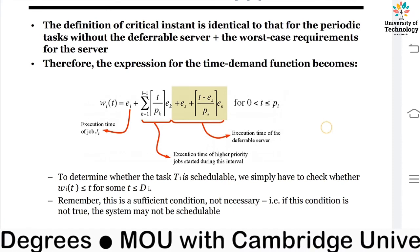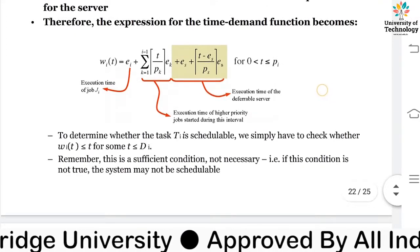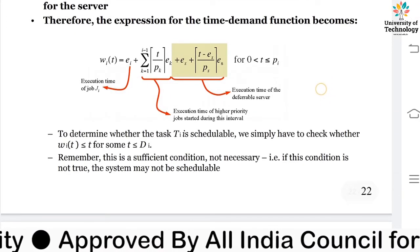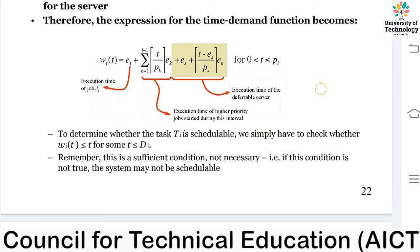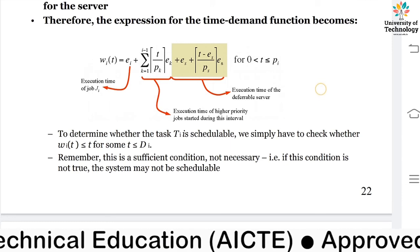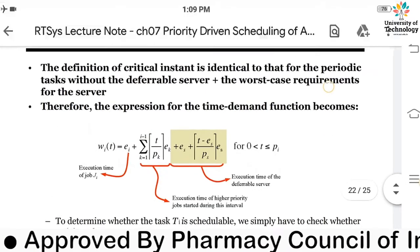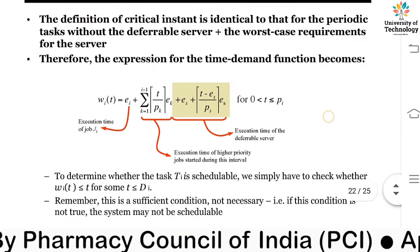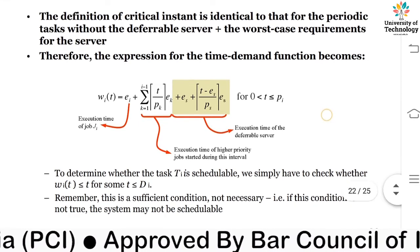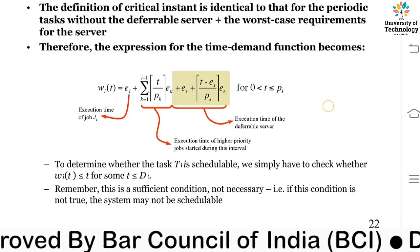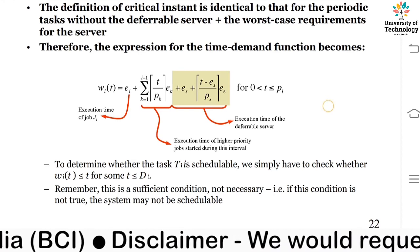Now we look at the expression for the time demand function. It is: w_i(t) = e_i + Σ(k=1 to i−1) of ceil(t / p_k) · e_k + e_s + ceil((t − e_s) / p_s) · e_s, where the condition is t ≥ 0 and t ≤ p_i. Here e_i is the execution time of job j_i, and the summation term represents the execution time of higher priority jobs started during this interval.